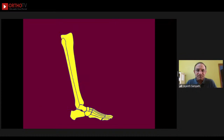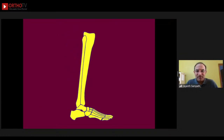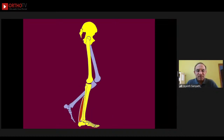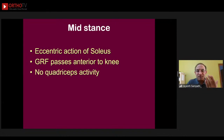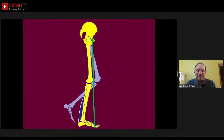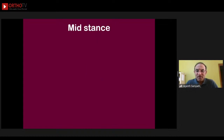Passive dorsiflexion is controlled by eccentric action of the soleus, just like passive plantar flexion in the first rocker was controlled by tibialis anterior. The soleus pulls the tibia back and allows the ground reaction force to pass anterior to the knee — the minute the ground reaction force passes anterior to the knee, the knee will passively extend even without active quadriceps activity. This is an energy conservation mechanism by which the body gets work done without wasting ATP.